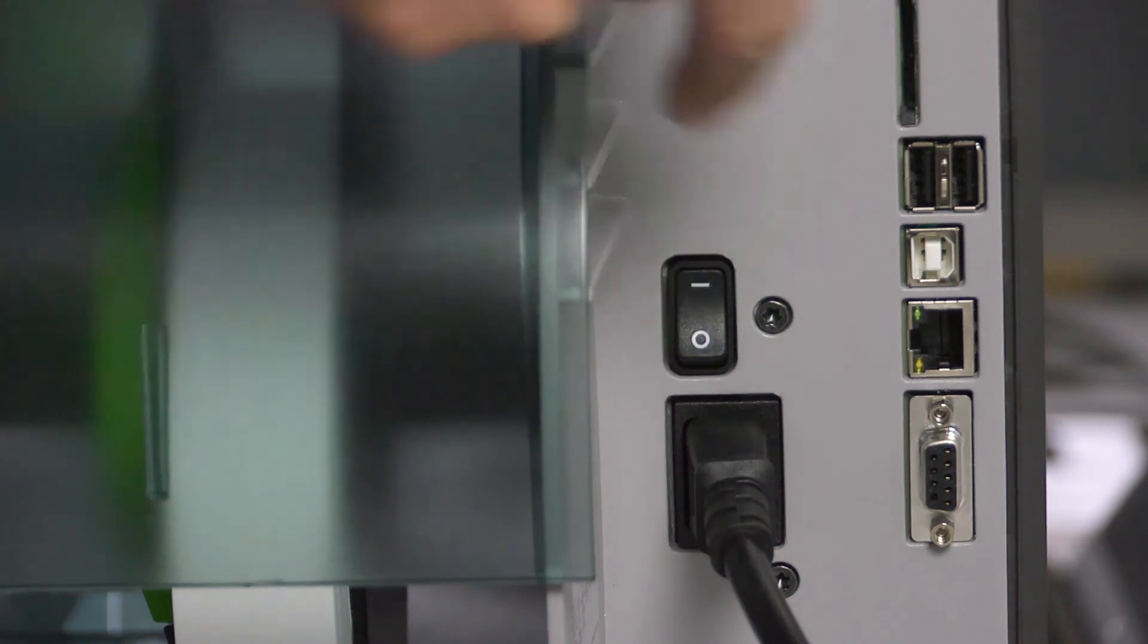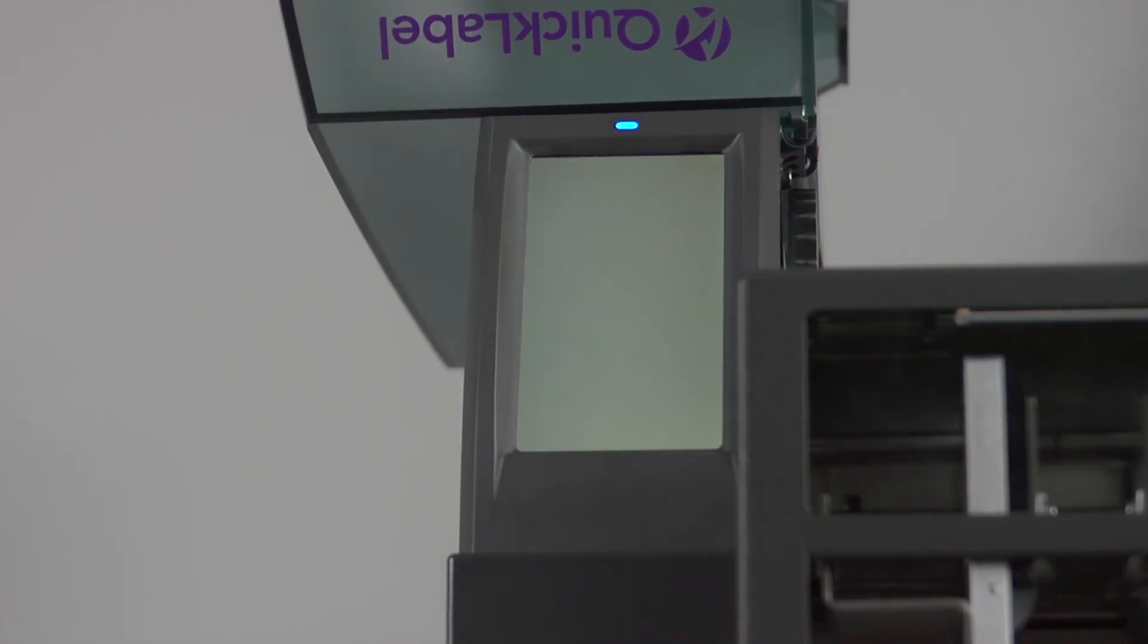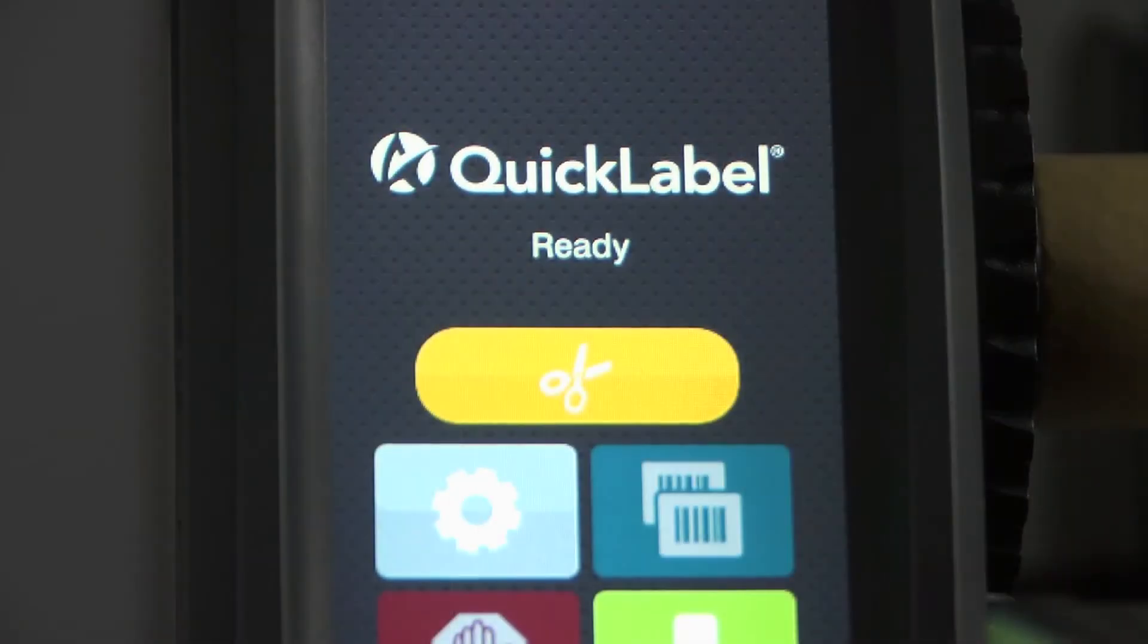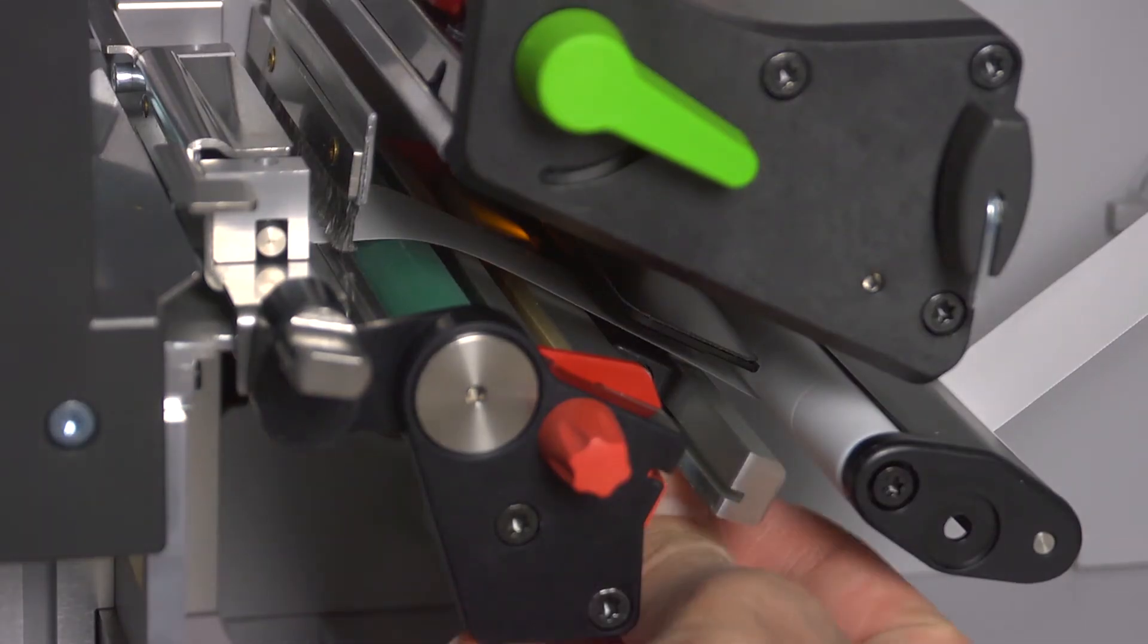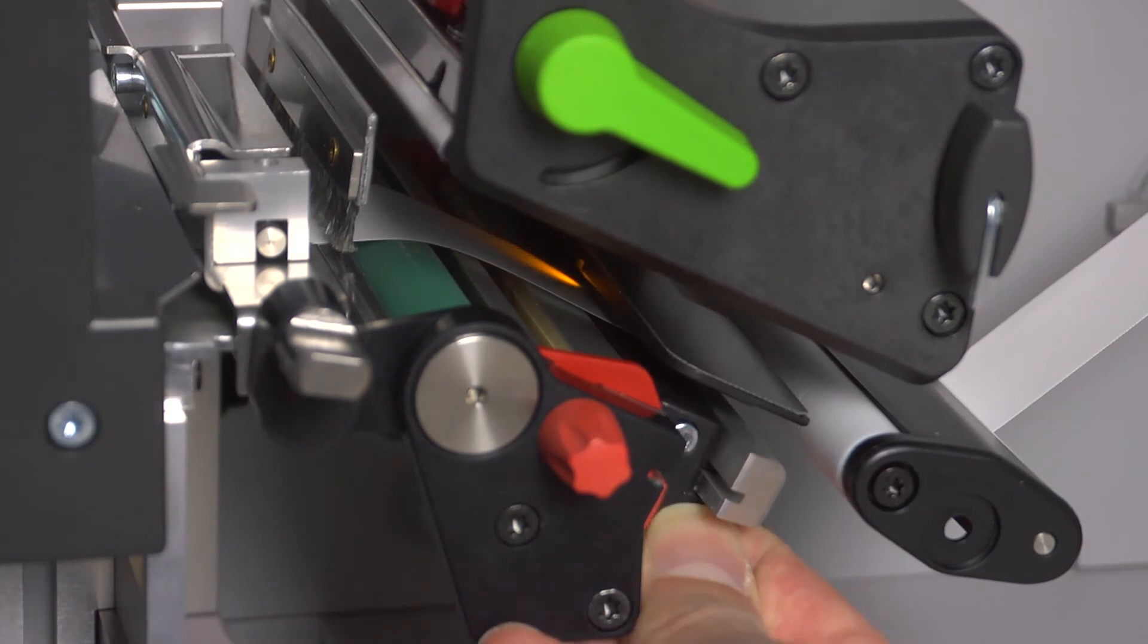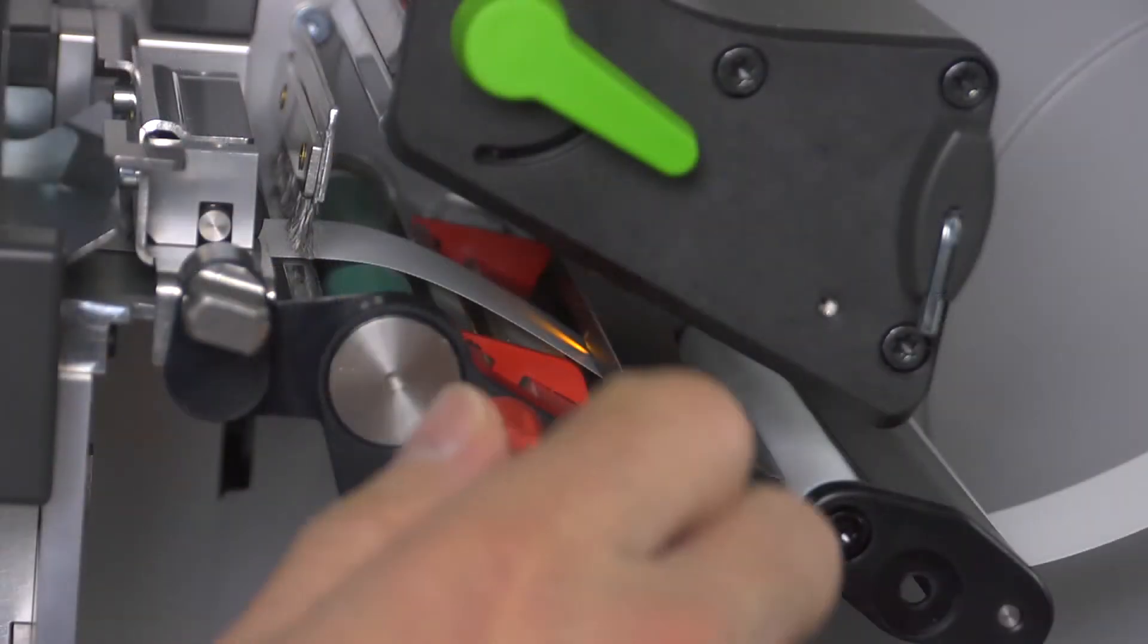Turn the printer back on. The cutting symbol will display on the touch screen indicating that the cutter stacker is installed correctly. Adjust the sensor to detect the material. Adjust the media guide.